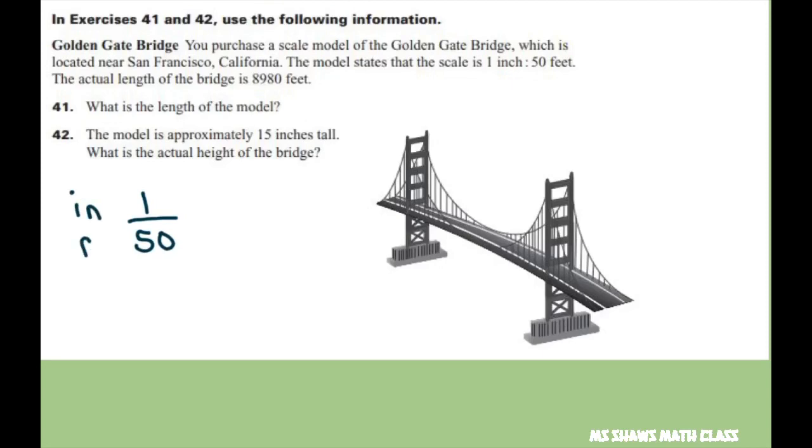The actual length of the bridge is 8980 feet, so we want the length of the model. Basically, if the feet is here, that's going to be 8980, and that's your X. That's what we're looking for, the length of the model, because it's one inch for the 50 feet. Cross multiply.